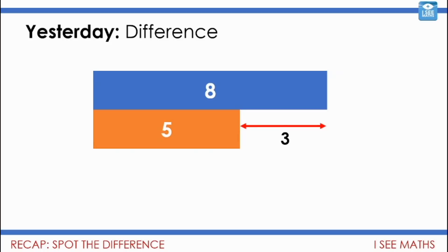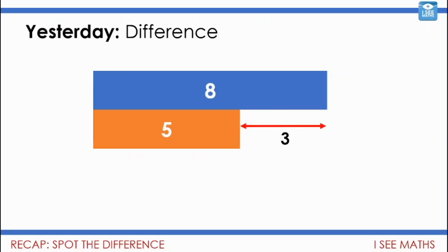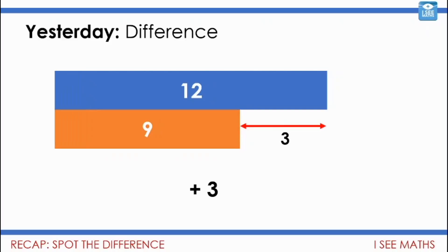Yesterday we were looking at difference. The difference between 8 and 5 is 3. Now if we add the same number to both 8 and 5, the difference will still be 3. So 8 and 5, add 1 to each: 9 and 6, difference is the same. If we add 3 to both numbers we get 12 and 9, and the difference stays the same.